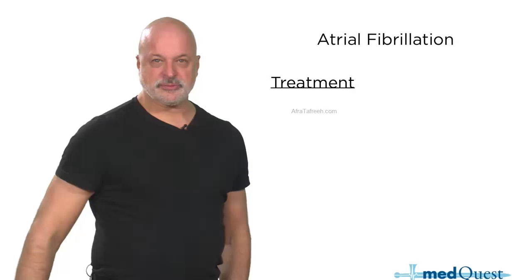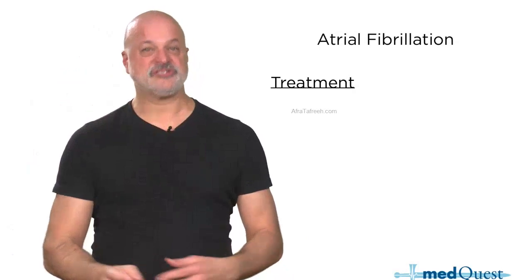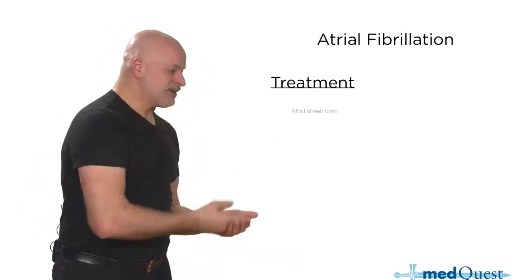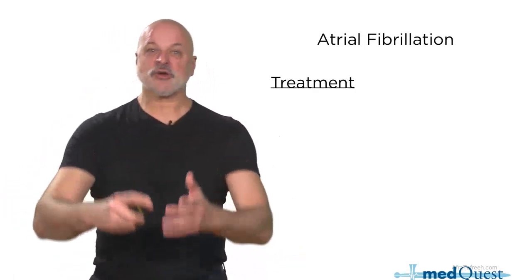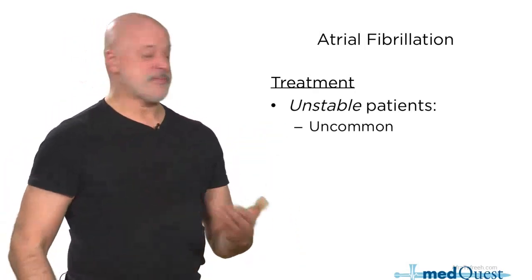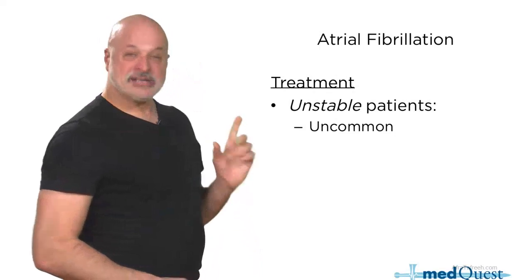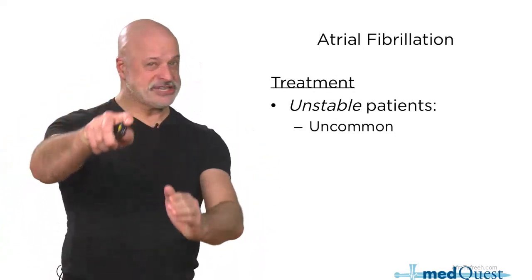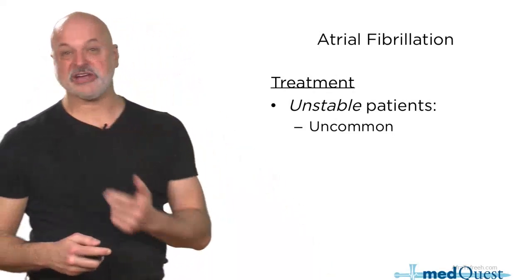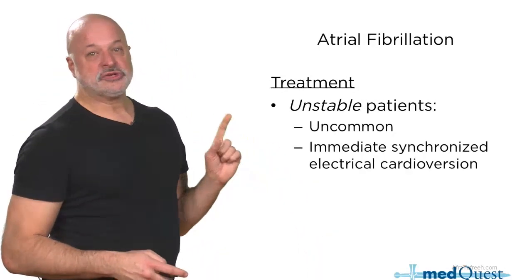What do you do to treat fibrillation? 99.9% or more of AFib is not hemodynamically unstable. Atrial fibrillation is rarely associated with hemodynamic instability. But if the patient is hemodynamically unstable, you do immediate synchronized cardioversion. You're synchronizing to the QRS so that you don't deliver the electricity in the refractory period, because if you do, you can make it worse. The machine times it for you.